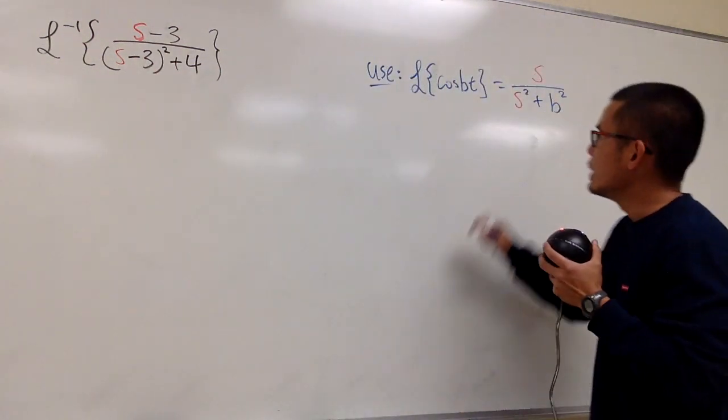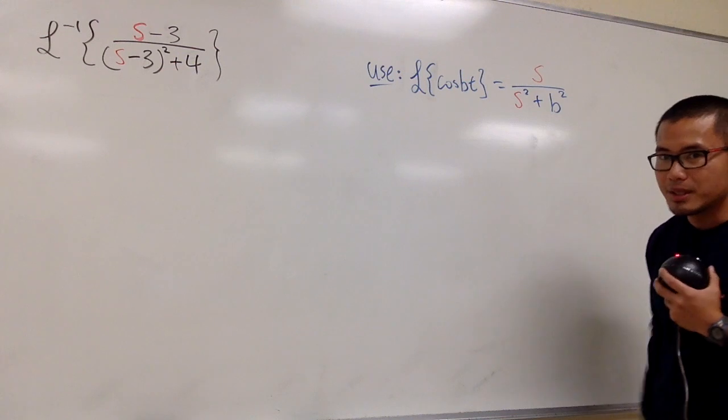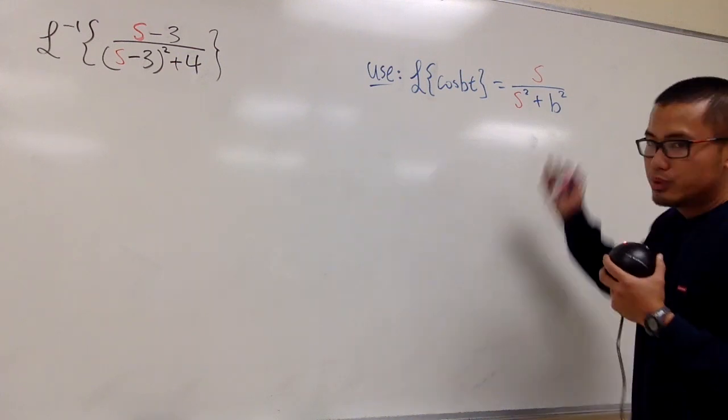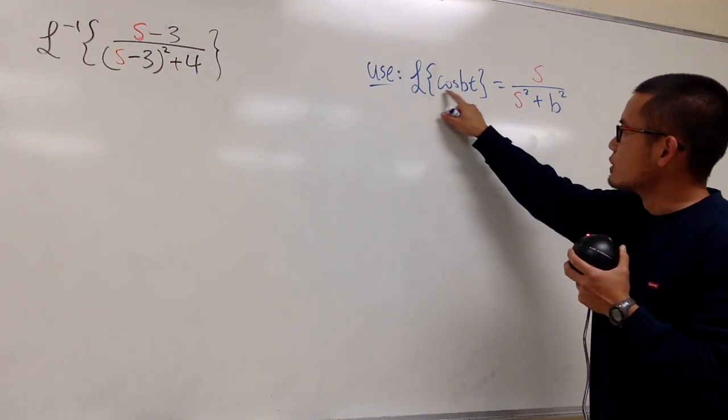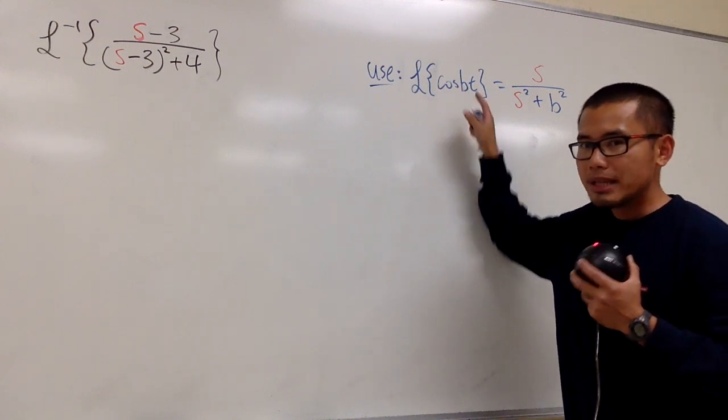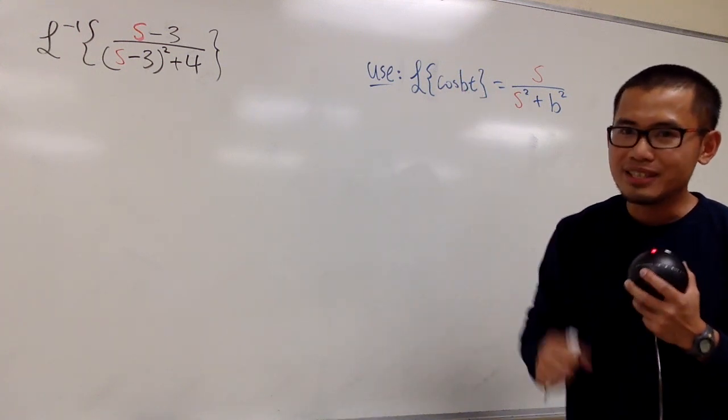That means we have to translate or shift this a little bit in the s world. To do so, instead of just cosine of bt, we have to multiply this by e to the at.